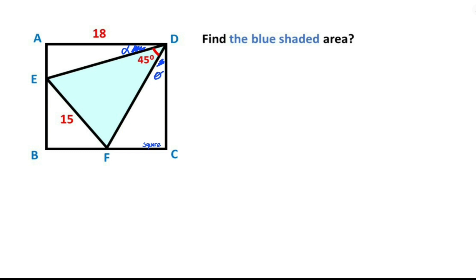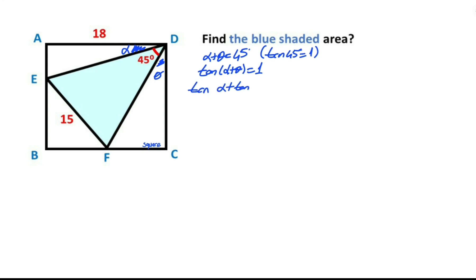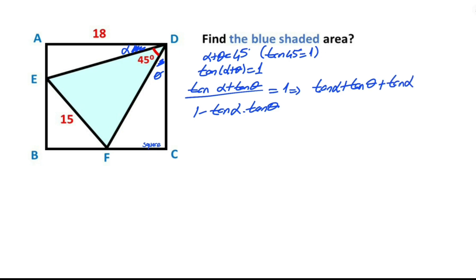Let's call this angle alpha and this angle theta. We know that alpha plus theta equals 45 degrees. Taking the tangent of both sides, tangent 45 degrees equals 1. Using the expansion of tangent(alpha + theta), we get: tangent alpha plus tangent theta over one minus tangent alpha times tangent theta equals 1.